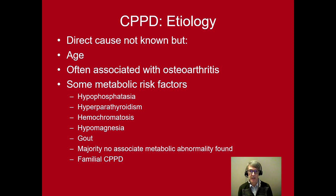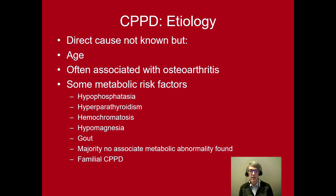There are some metabolic risk factors: hypophosphatasia, hyperparathyroidism — as you can imagine because it can cause high calcium — hemochromatosis, hypomagnesemia, and gout. However, the majority of patients that have this have no associated metabolic abnormality found. There are also familial groups that have calcium pyrophosphate deposition disease, but this does not happen very often.